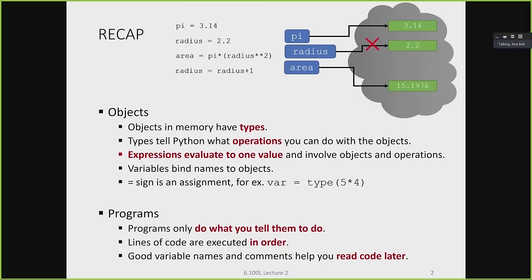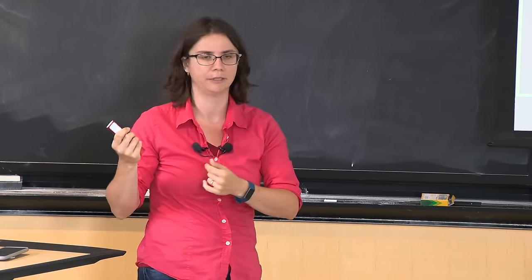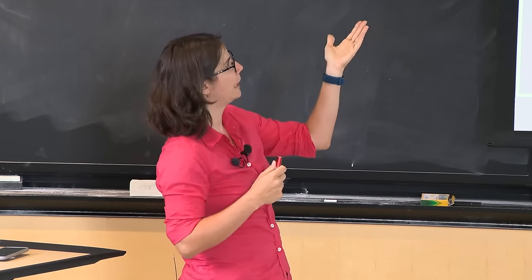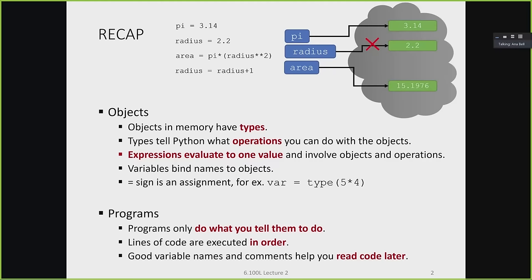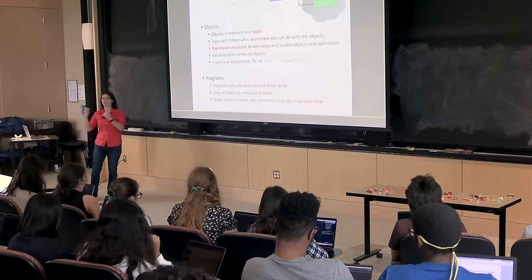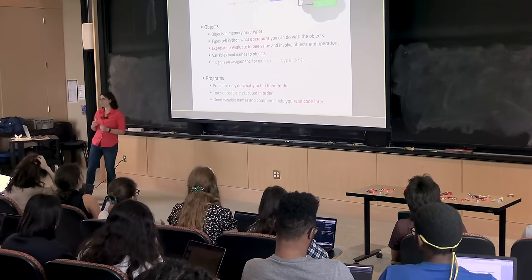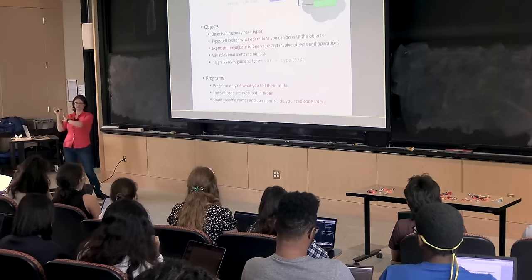We can do something in Python that we can't do in math — for example, radius equals radius plus 1. Python evaluates the right-hand side first: it grabs 2.2, adds 1, gets 3.2, creates a new object in memory, and rebinds the name radius to 3.2. We're not modifying objects in memory; we're creating new objects. We'll see how to modify objects later.